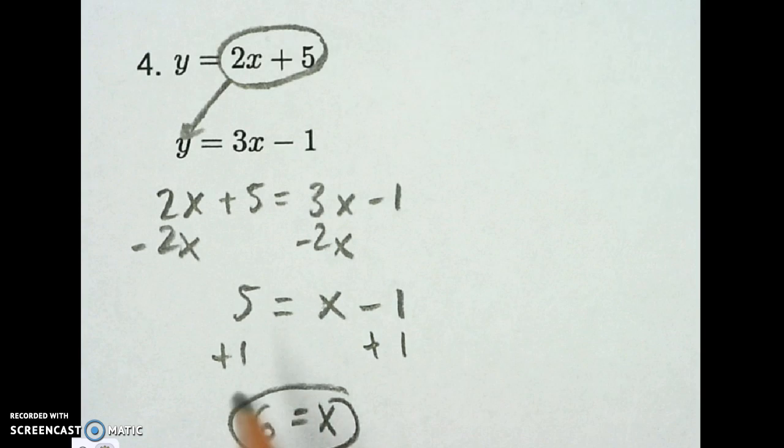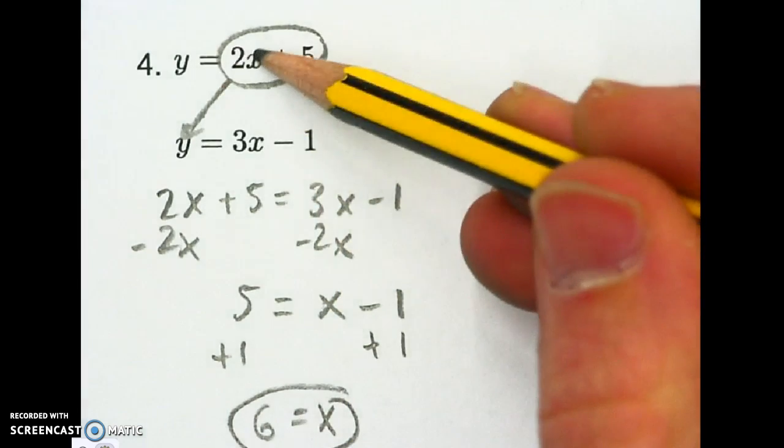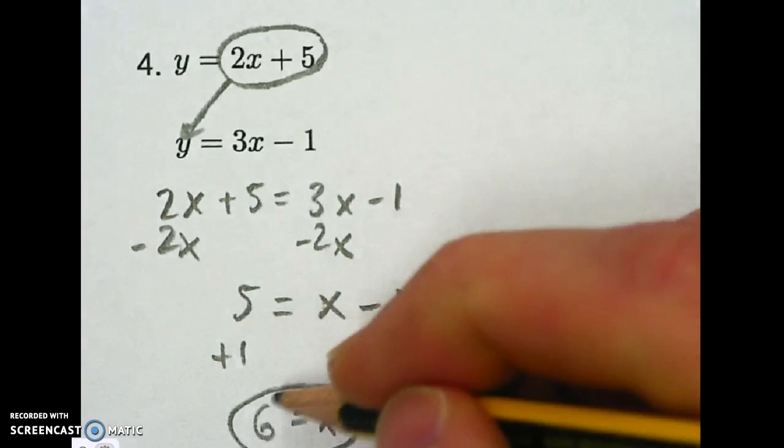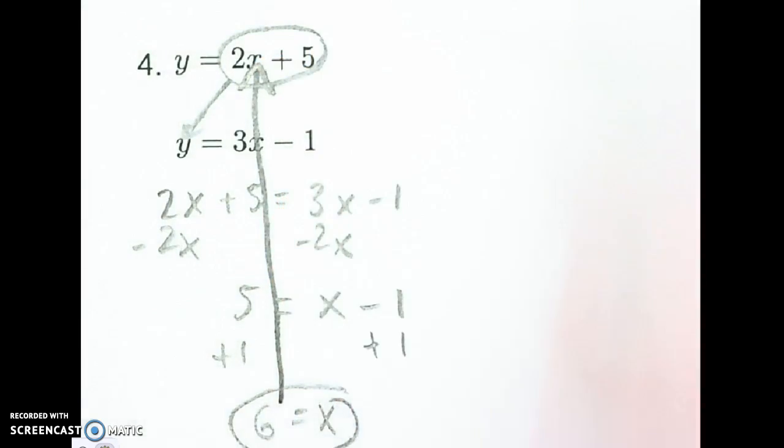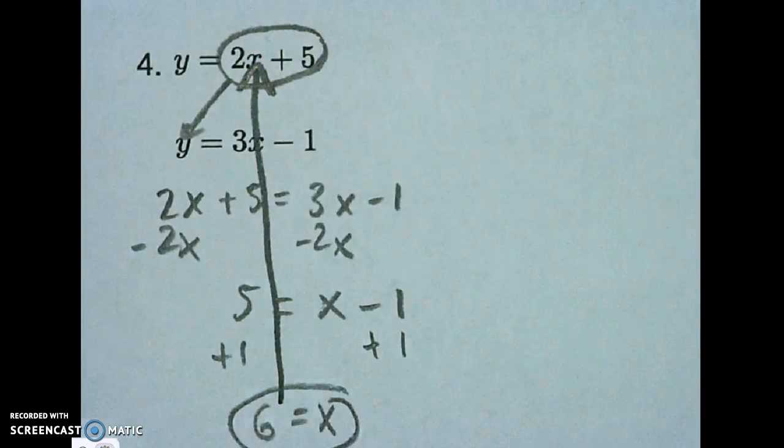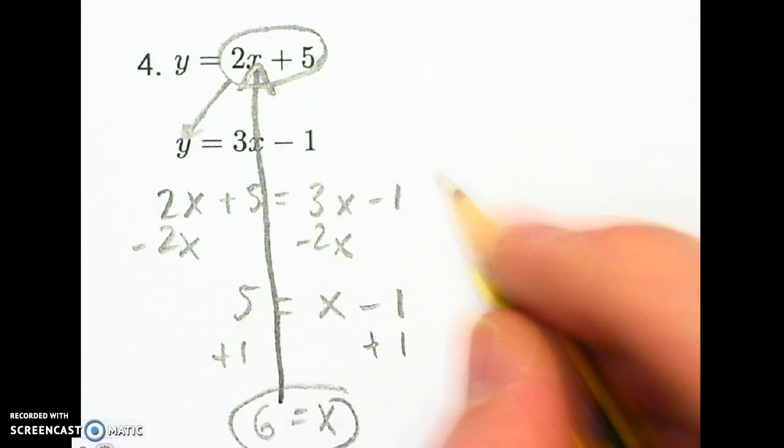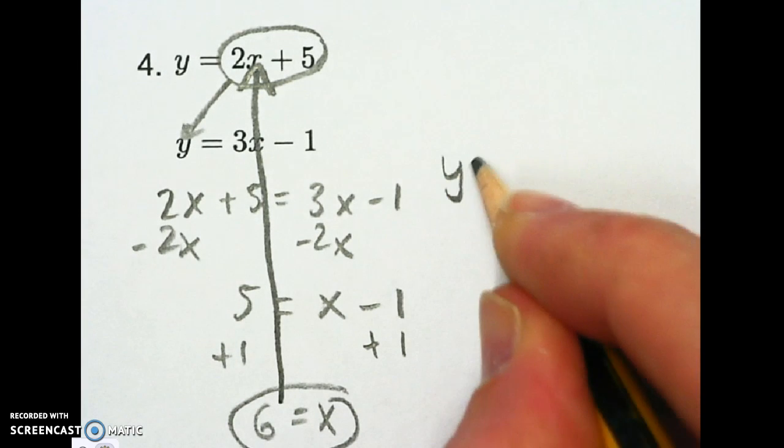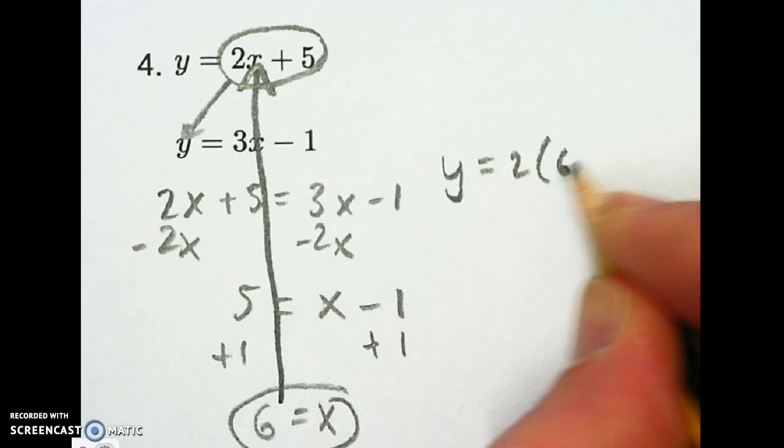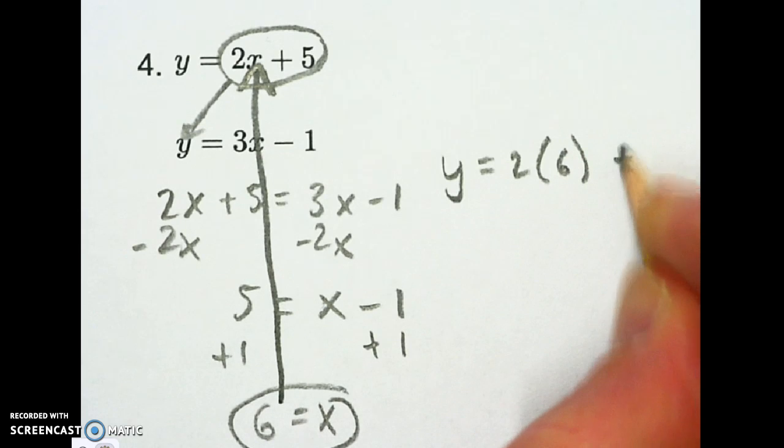Okay, for my next step, I need to take x and plug it in. I'm going to plug it in right there. So now I'll have y equals 2 times 6 plus 5.